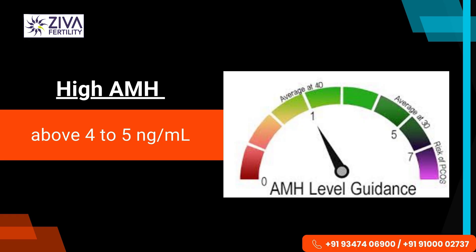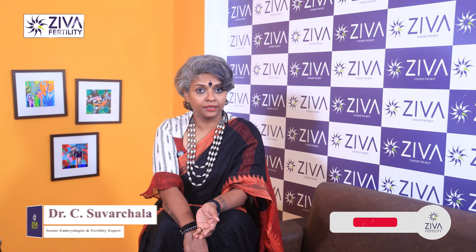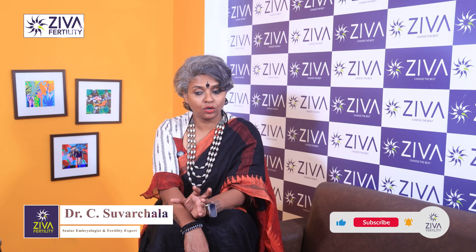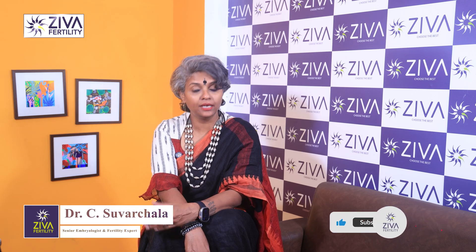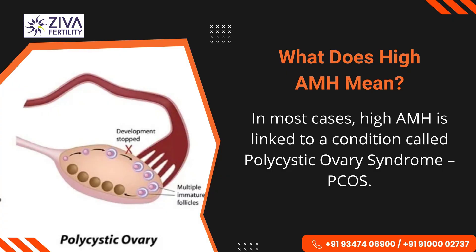High AMH is generally above 4 to 5 nanograms per milliliter. Remember, more eggs doesn't always mean better fertility. You should not correlate high AMH with a better fertility potential, even though we do have a greater number of eggs.